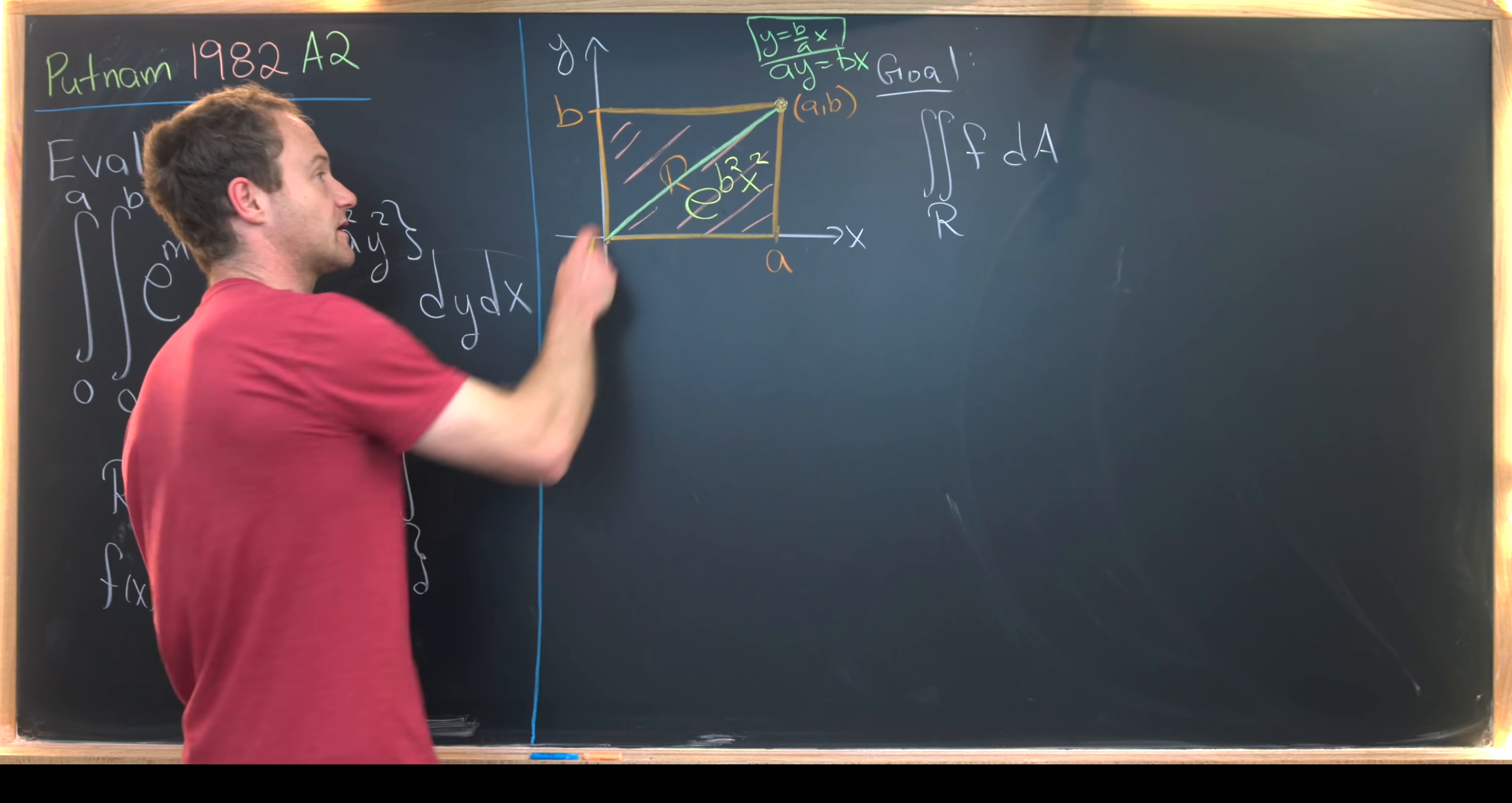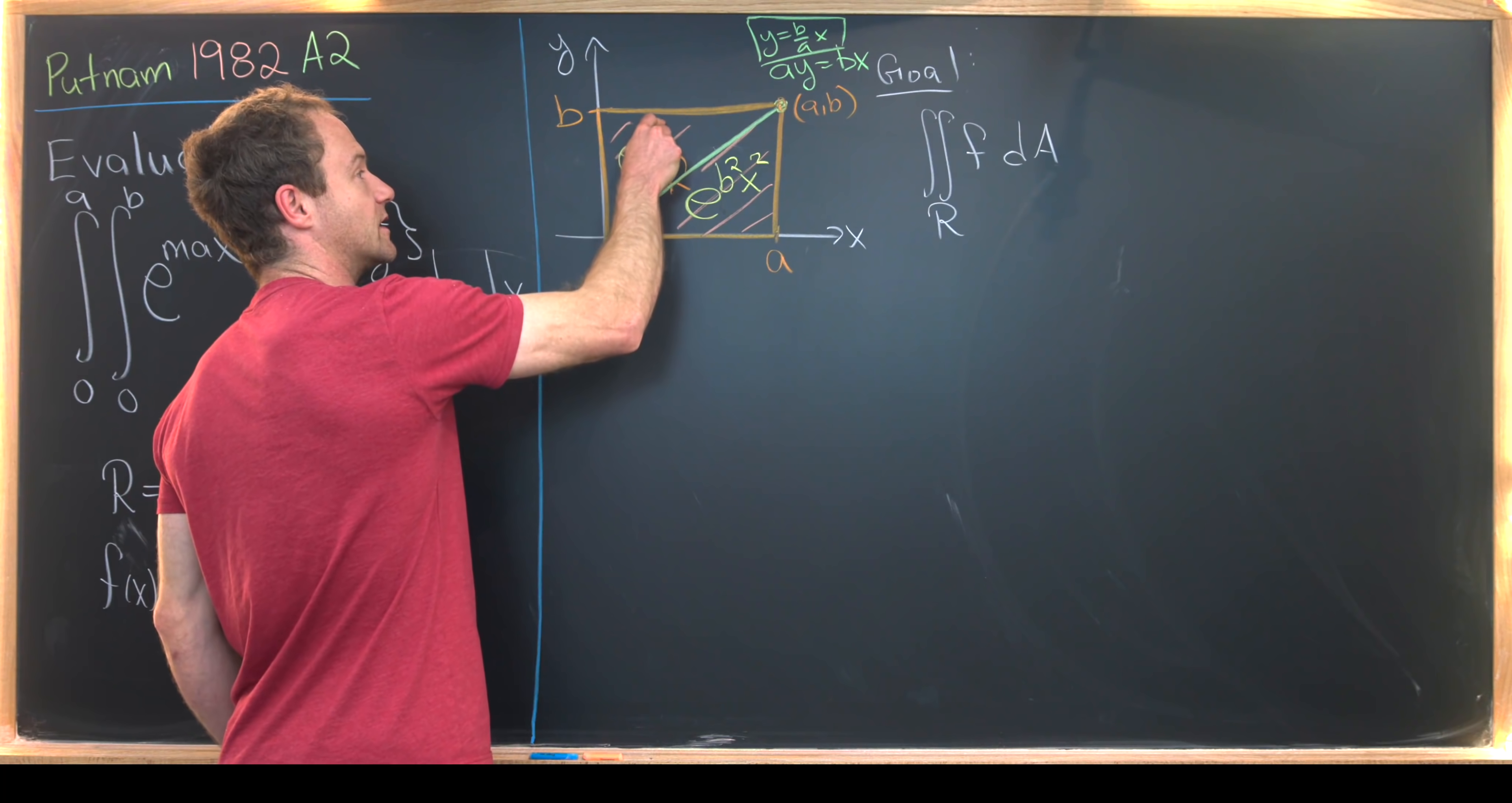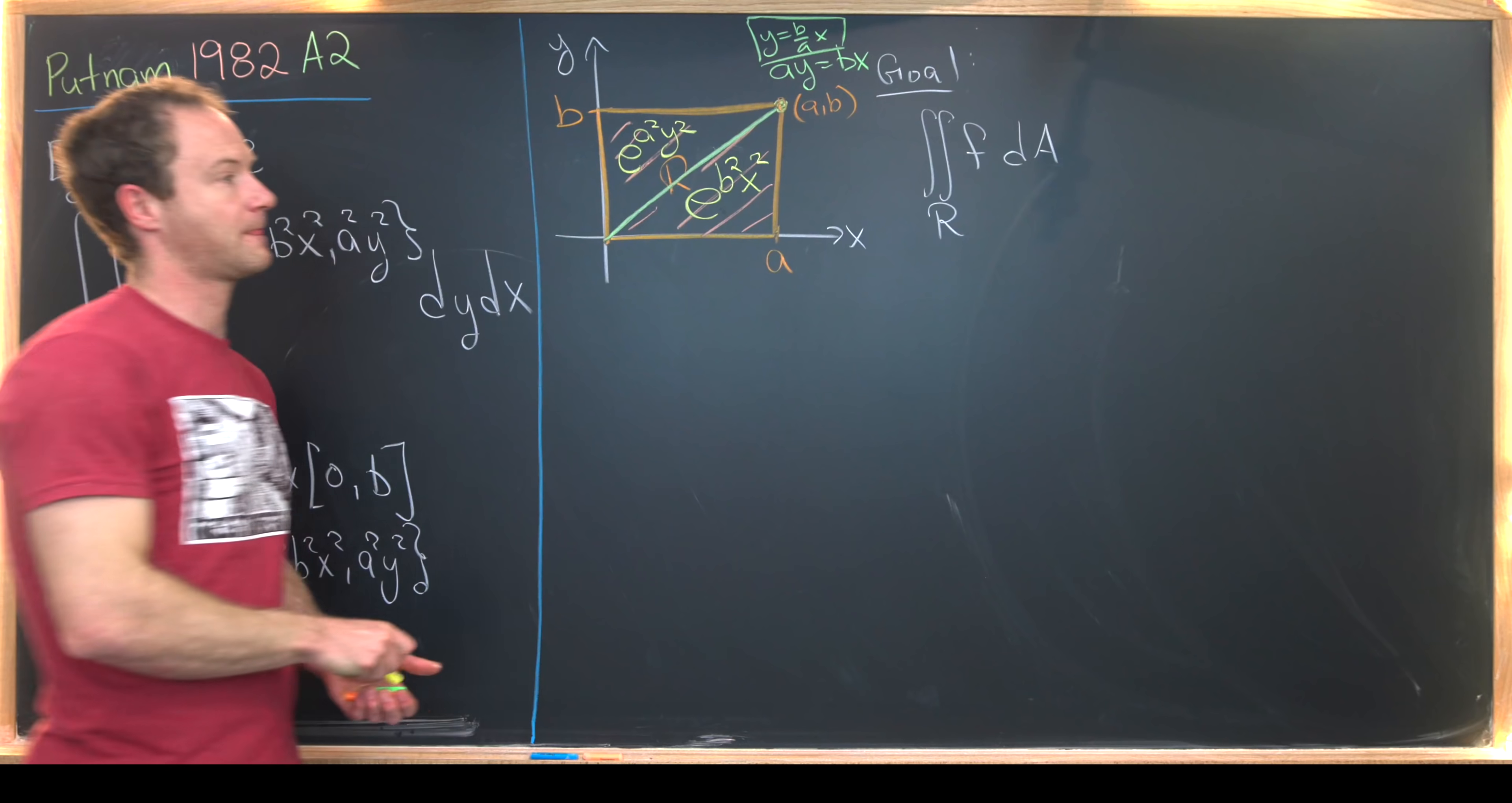Then up here, it's the opposite, we have e to the a squared, y squared. Okay, nice.